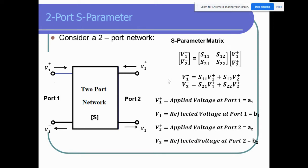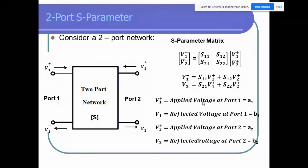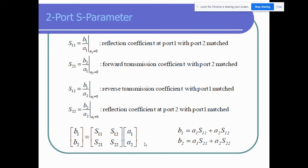This is similar to the Y and Z matrix formulations. However, to make things easier to write, we replace all applied voltages with 'a' and all reflected voltages with 'b', because writing V-minus-1 and V-plus-2 can be tedious. So 'a' means applied/incident and 'b' means reflected, which gives us a cleaner matrix form.